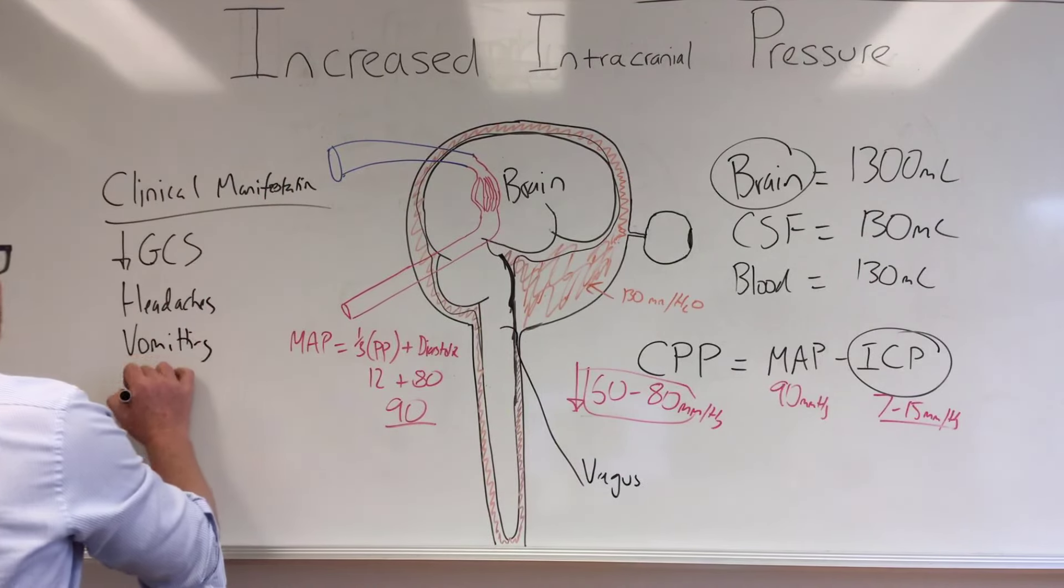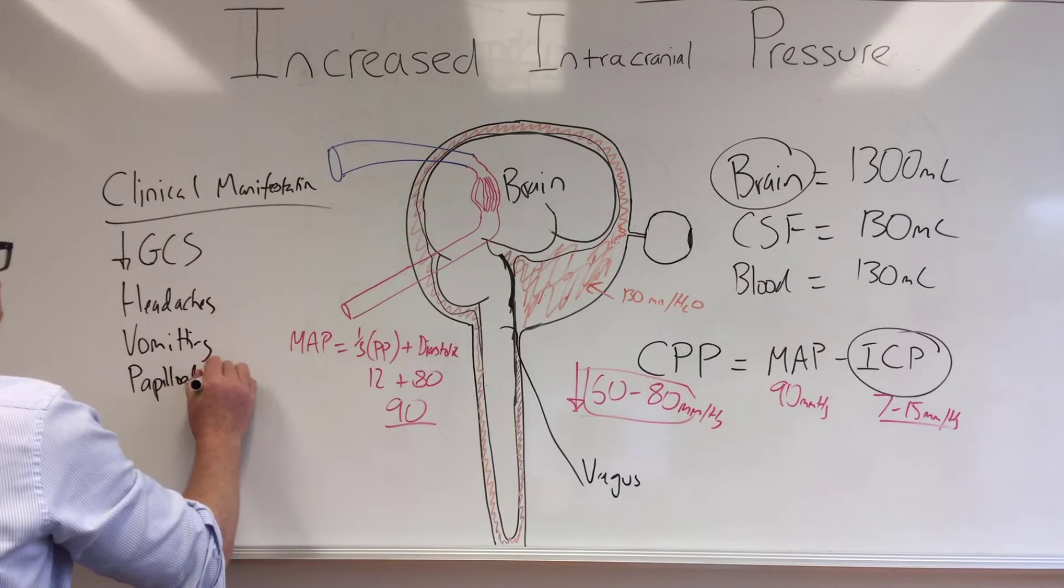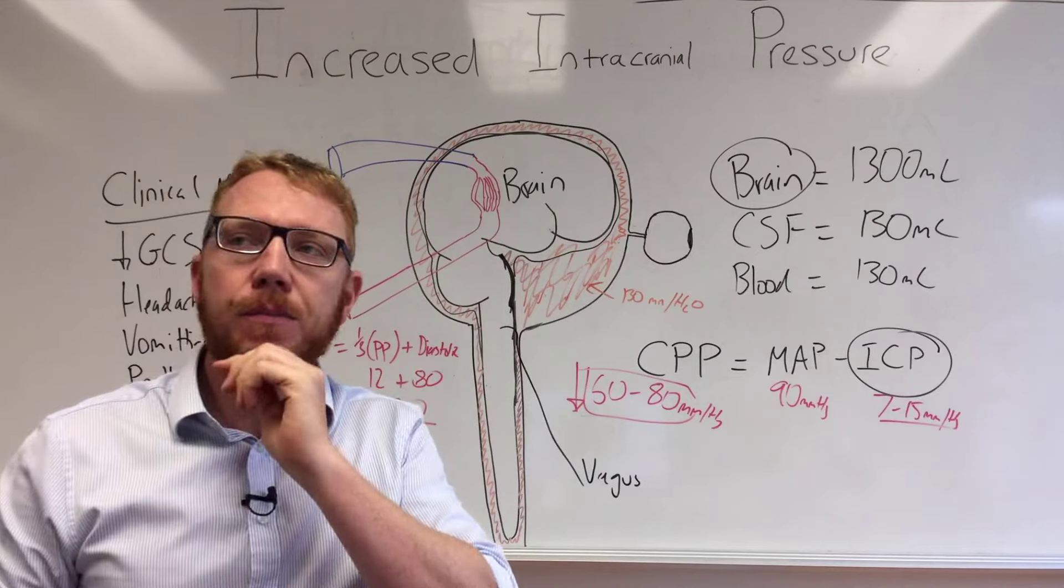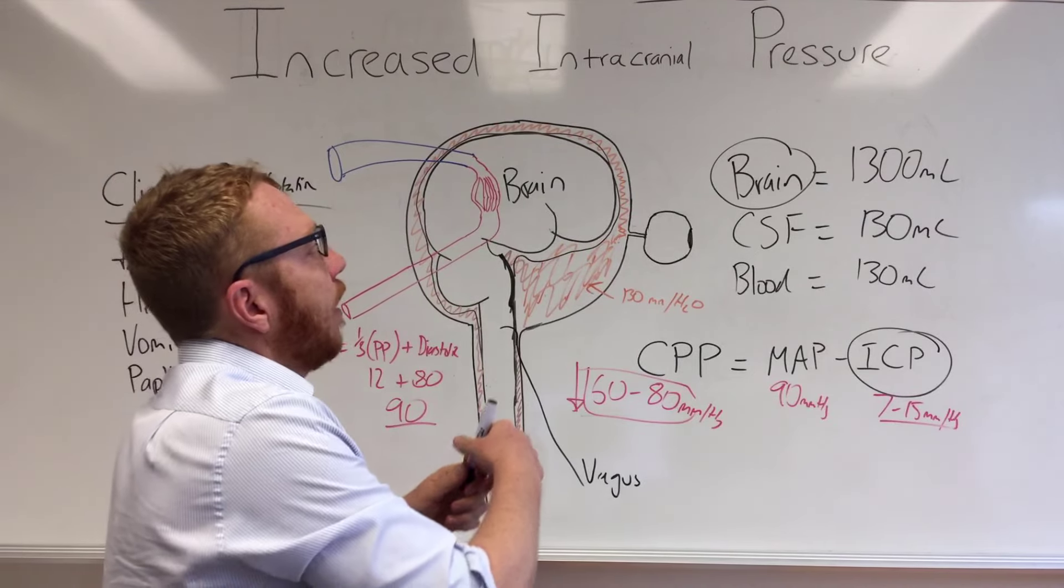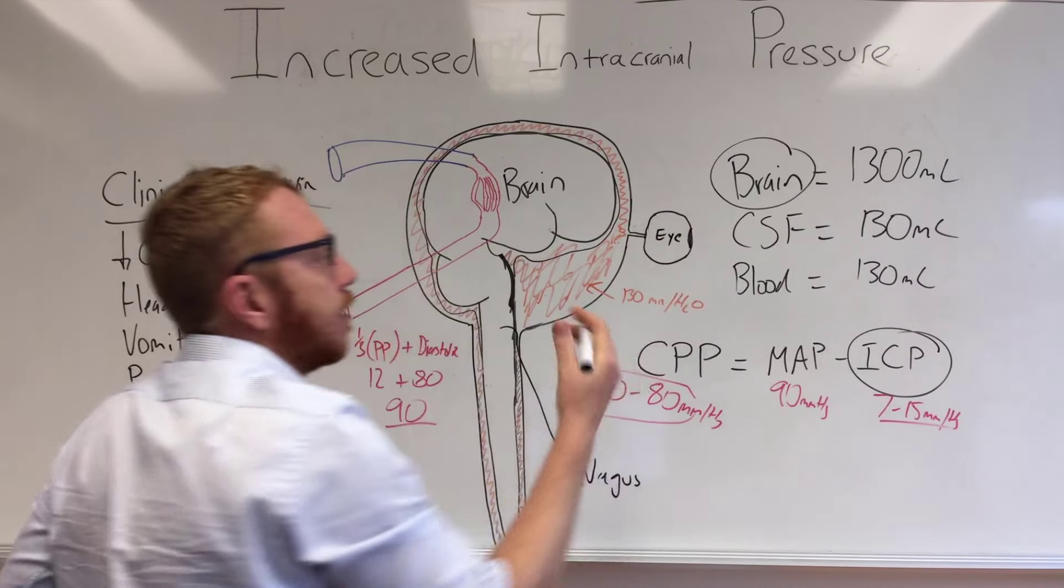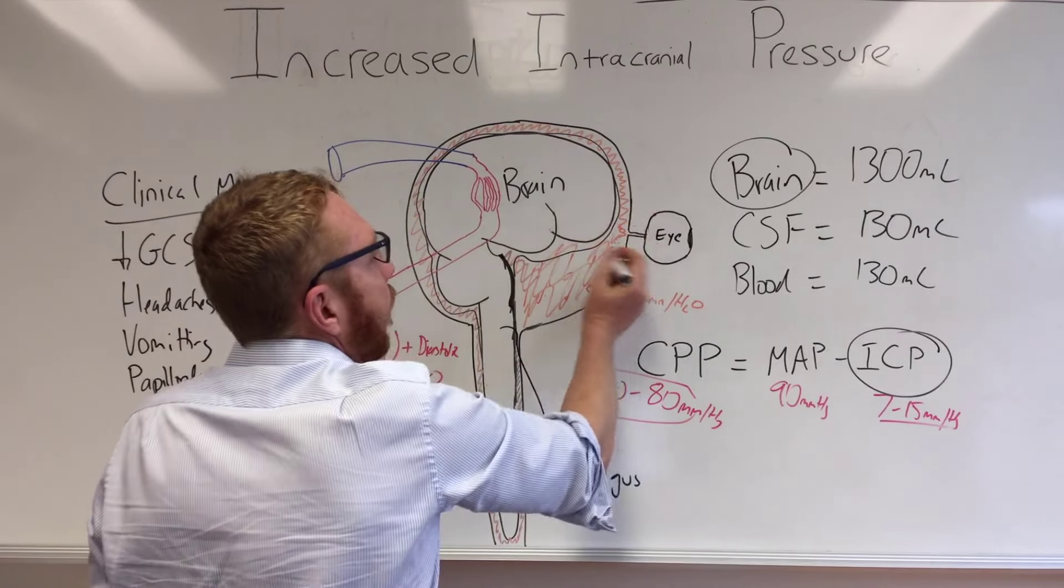The next one is papilledema. This is essentially swelling of the optic disc. Papilledema is, we've got here the eye, again it's schematic, it's not accurate.